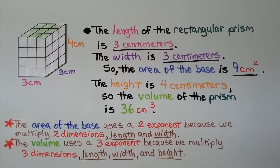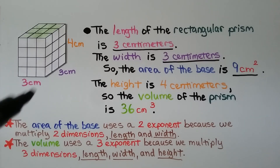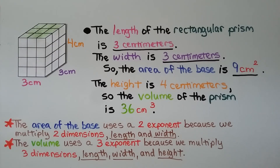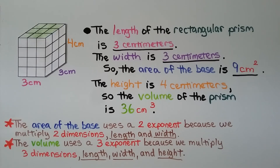The length of this rectangular prism is 3 centimeters and the width is 3 centimeters, so the area of the base is 3 times 3 — that's 9 centimeters squared. The height is 4 centimeters, so the volume of the prism is 9 times 4, which is 36 centimeters cubed. We use a 3 exponent for volume because we multiply 3 dimensions: length, width, and height.